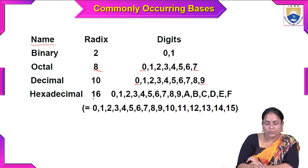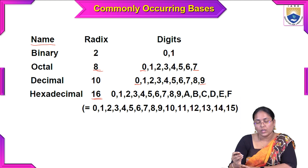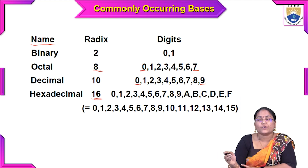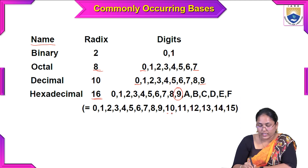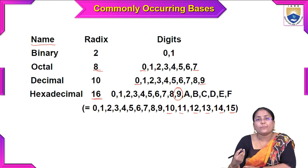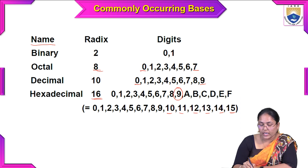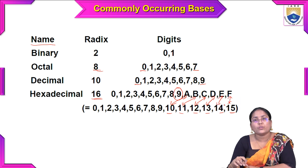Next comes the very important hexadecimal number system. 'Hexa' means 6 and 'decimal' means 10, so together it has a base of 16. Hexadecimal should have numbers from 0 to 15. But after 9, instead of writing 10, 11, 12, 13, 14, 15, we represent them using capital alphabets: 10 corresponds to A, 11 to B, 12 to C, 13 to D, 14 to E, and 15 to F.